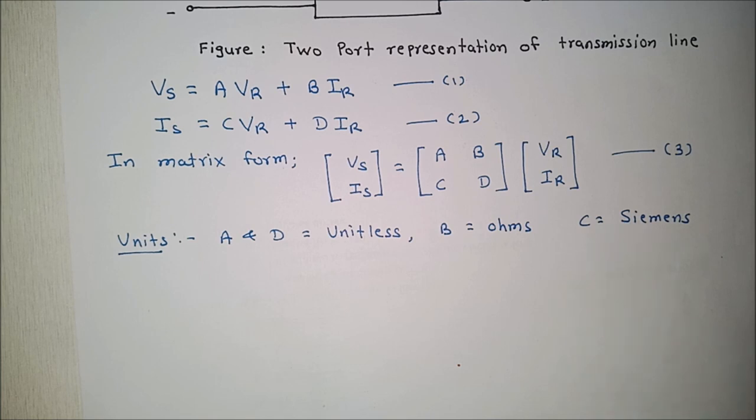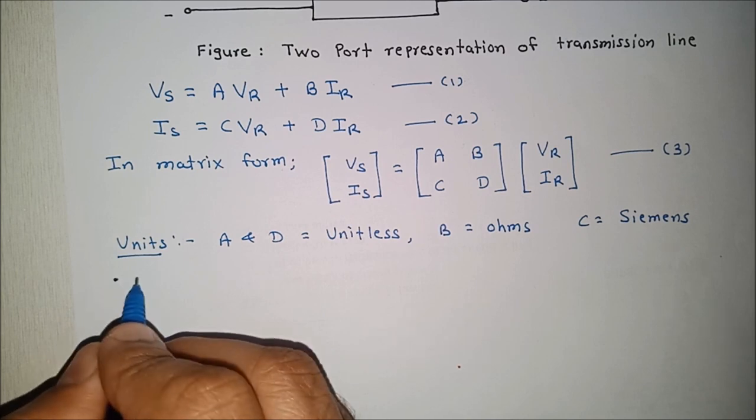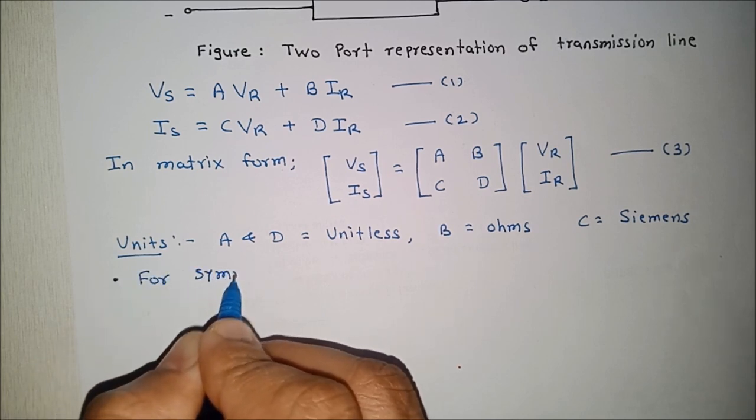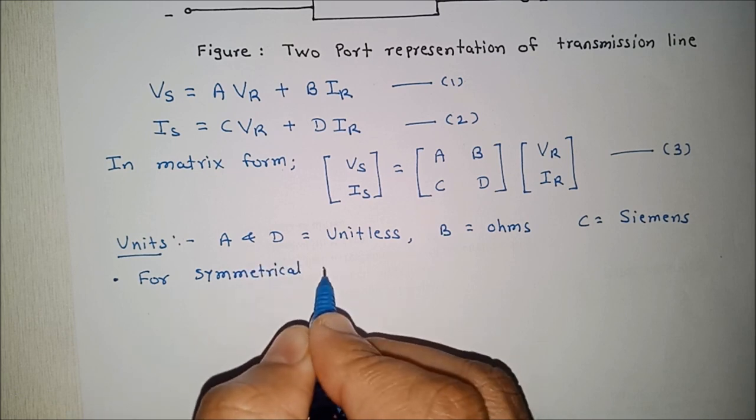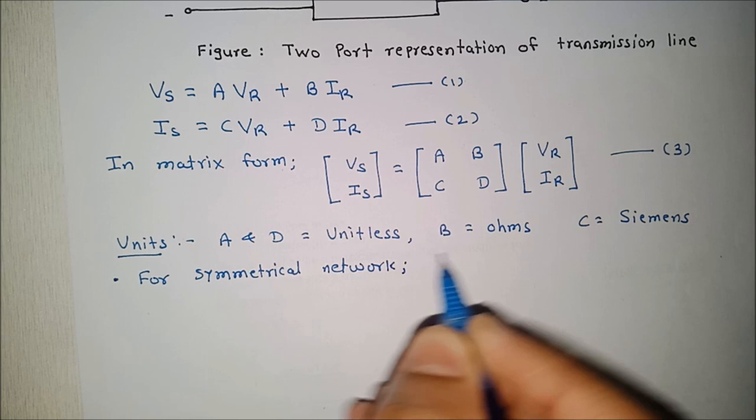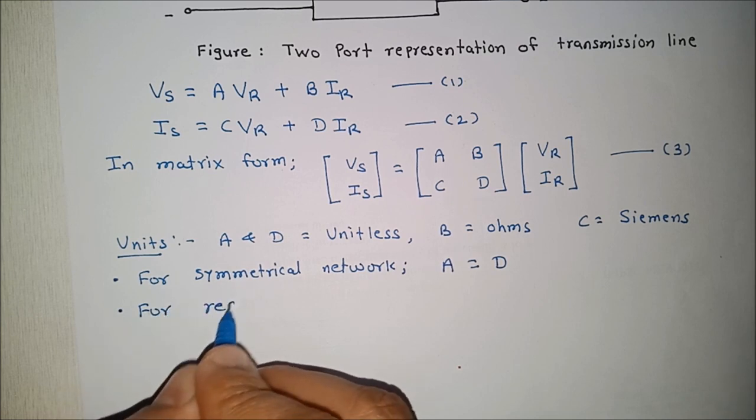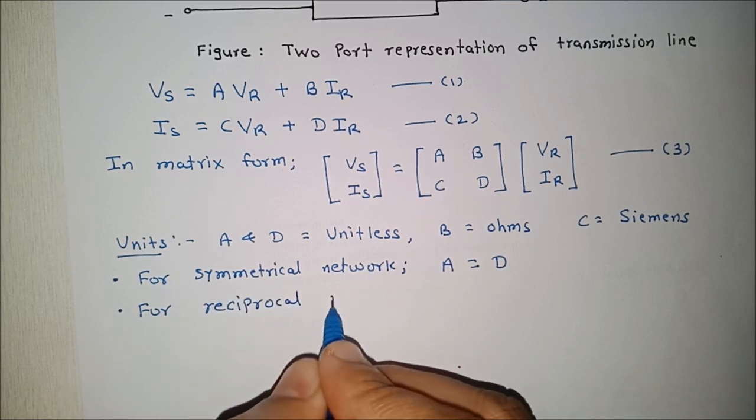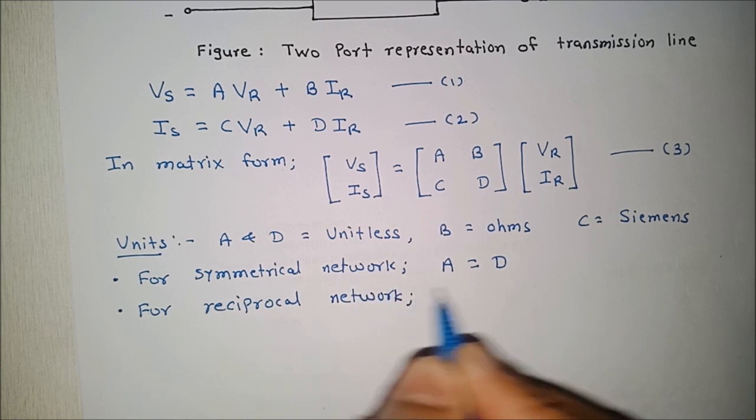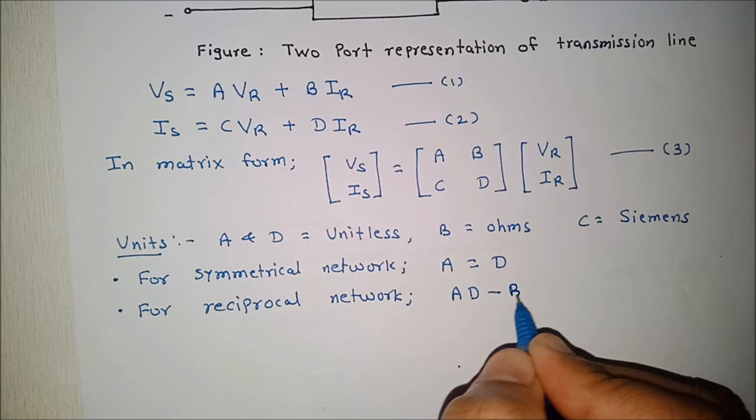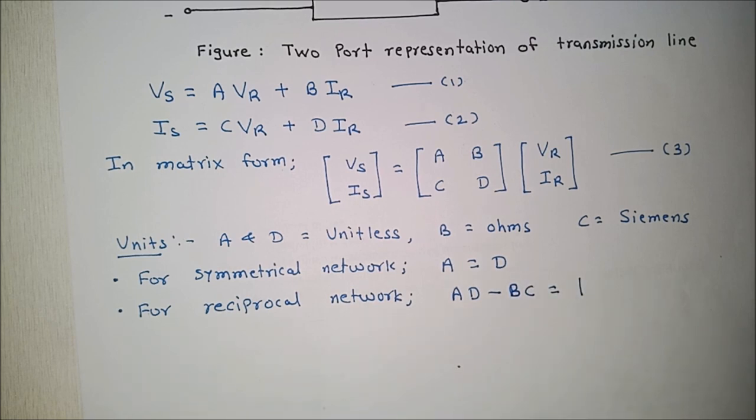So one more important point, if your line is symmetric, so for symmetrical network, A is equal to D. And for reciprocal network product of AD minus BC is equal to 1. So this is applicable A equal to D if your line or the network is symmetric and this equation is valid AD minus BC equal to 1 if your network is reciprocal.